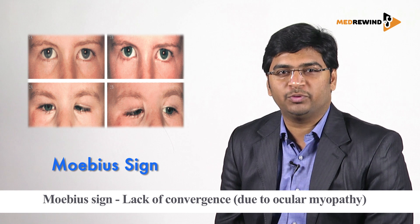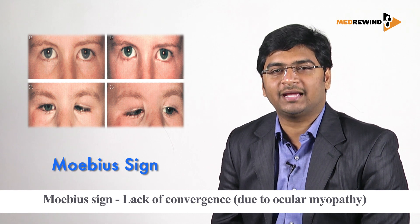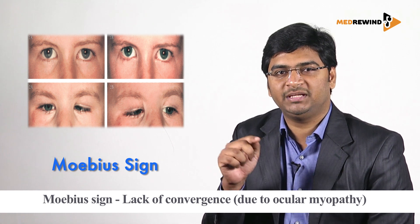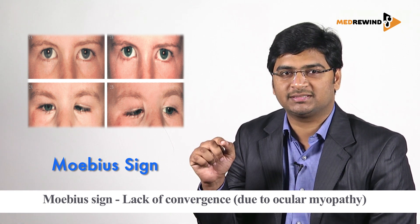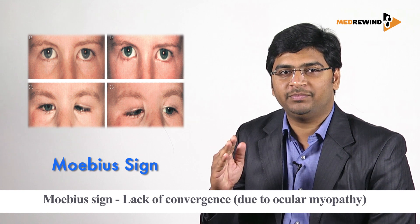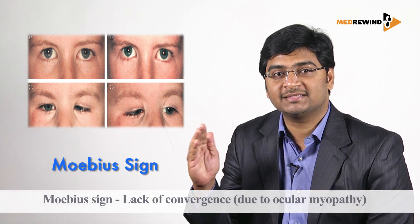The next sign is Möbius sign, spelled M-O-E-B-I-U-S. This means meeting of the eyeballs is unsuccessful — that is, failure of convergence.